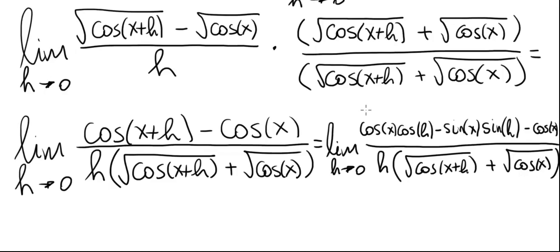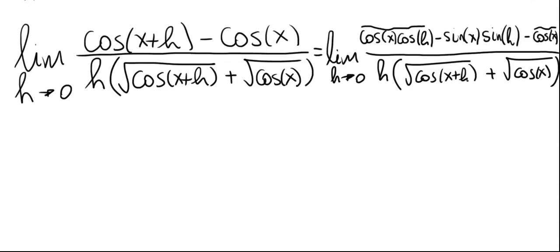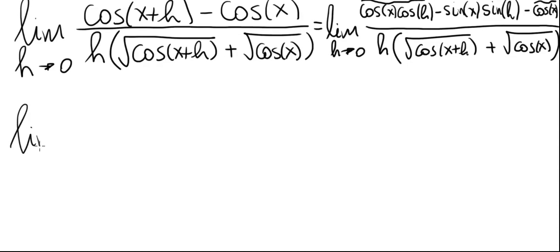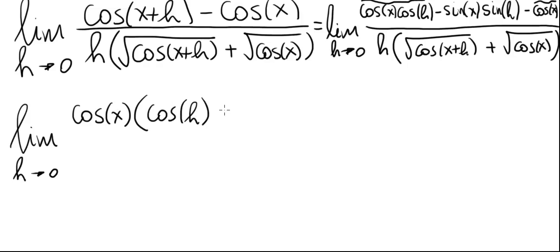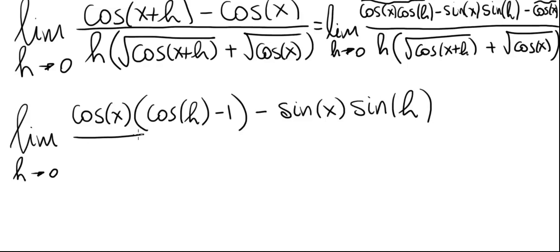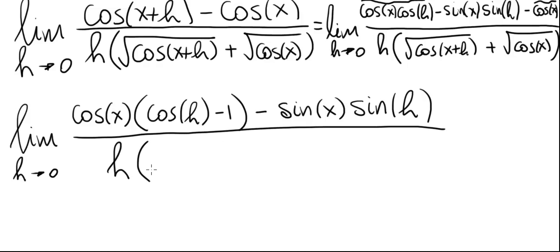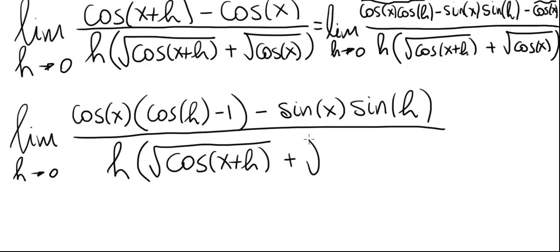Notice that the terms cosine of x times cosine of h and cosine of x have cosine of x in common. The next step is to factor out cosine of x. This becomes the limit as h goes to zero of cosine of x times (cosine of h minus 1) minus sine of x times sine of h, all divided by h times the square root of cosine of (x+h) plus the square root of cosine of x.